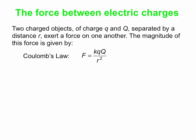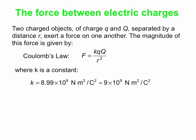So the bigger you make either of the charges, the bigger the force gets. And the more distance you put between the charges, the smaller the force gets. k is a constant, and it has a value very close to 9 times 10 to the 9 Newton meters squared per Coulomb squared.